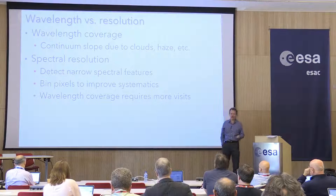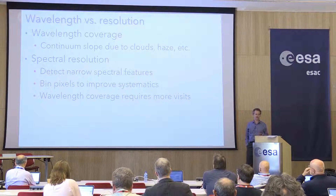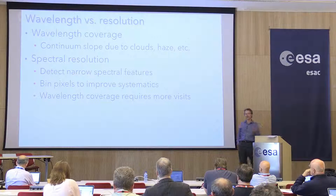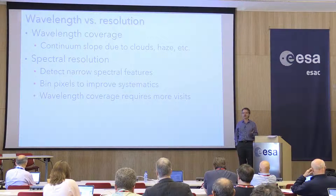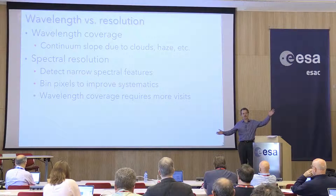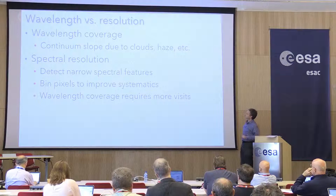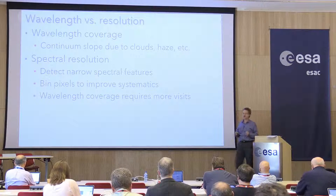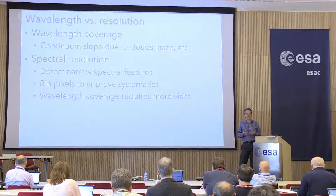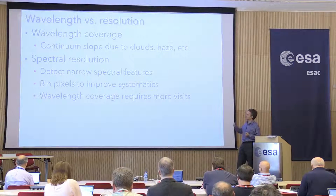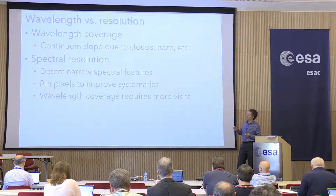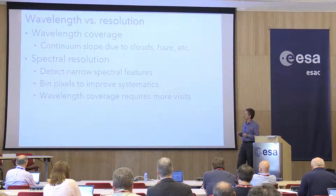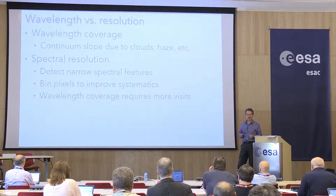The first and most important thing in my mind is wavelength coverage versus spectral resolution. Different types of science need different things. In exoplanet science, it's my perception that more than half the community feels wavelength coverage is the most important thing. They want to study processes where you really need a long lever arm to distinguish clouds and haze from other things. But there are many types of science where high spectral resolution matters — detecting narrow spectral features, and you can bin high resolution spectra back to lower resolution, averaging over pixel sensitivity issues.